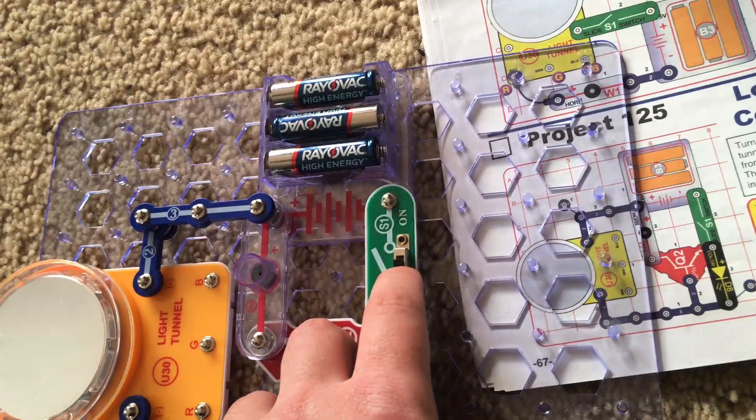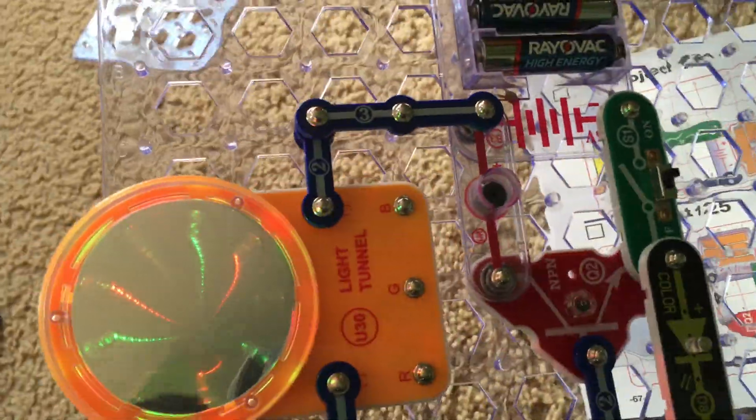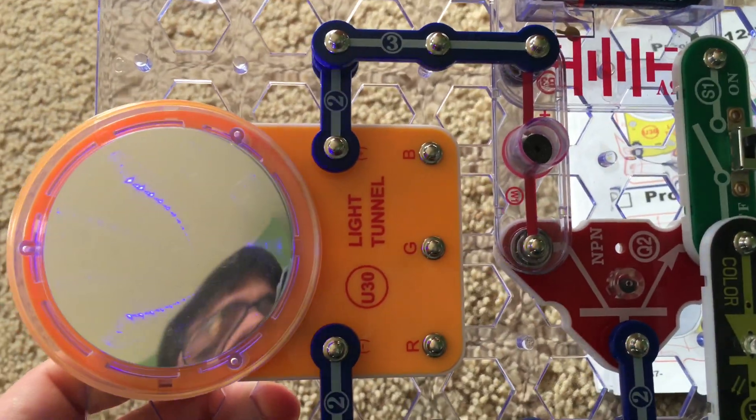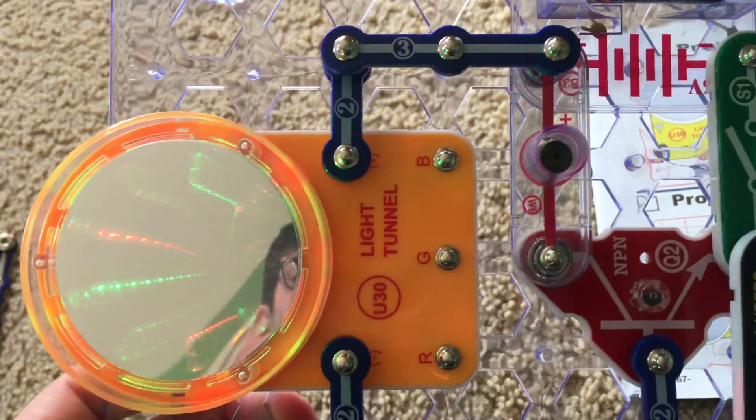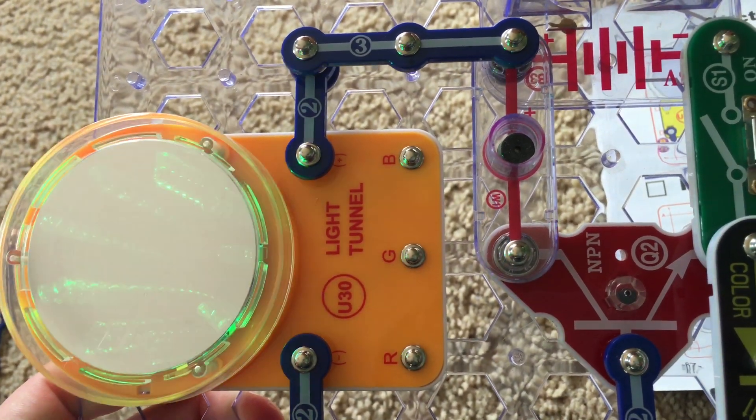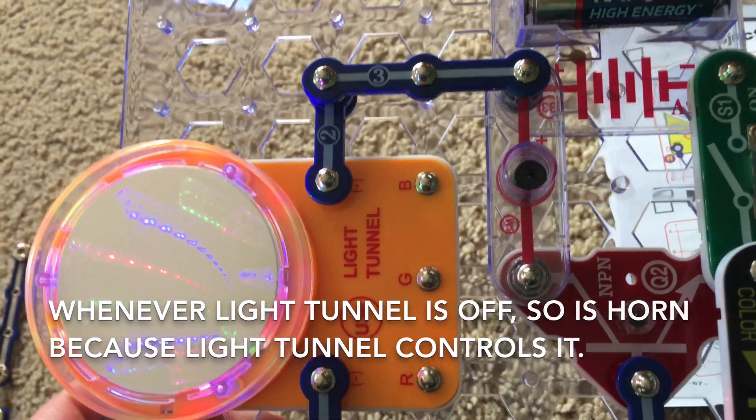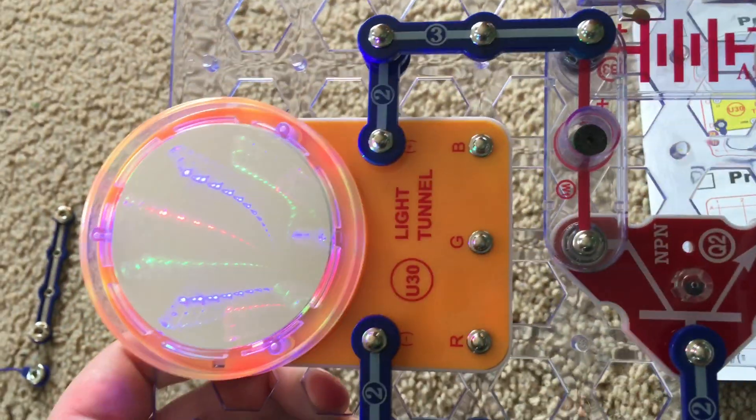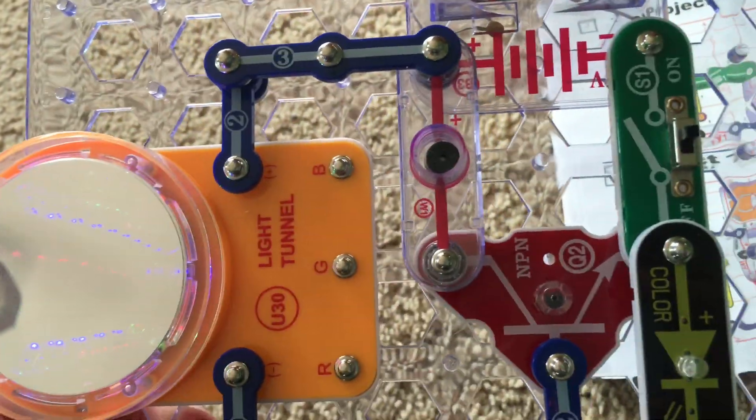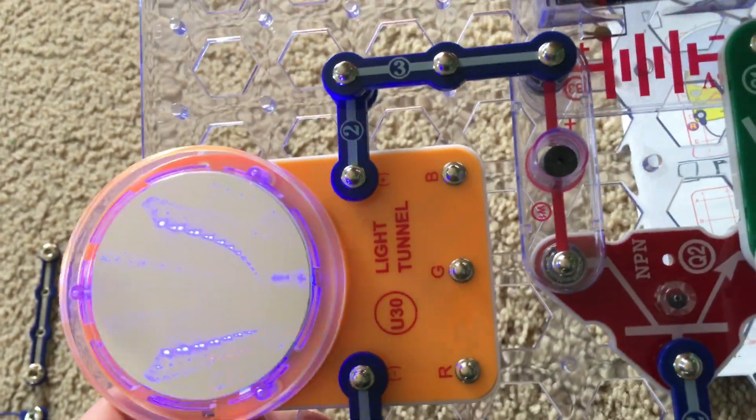The light tunnel turns on and produces a show and the horn may sound a little weird. It may appear that whenever all the LEDs in the light tunnel are off, so is the horn. That's because the LEDs are controlling the current flowing through the horn.